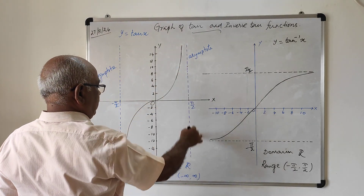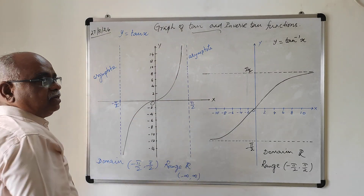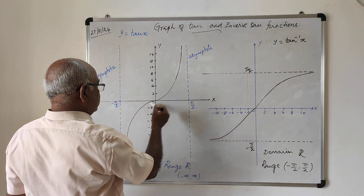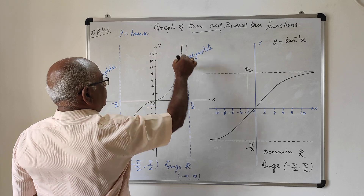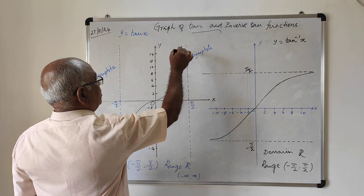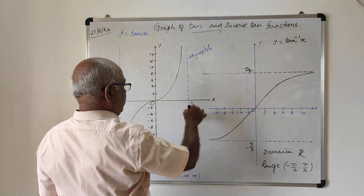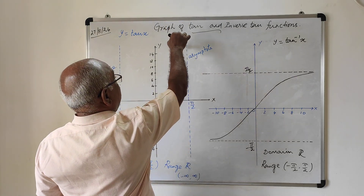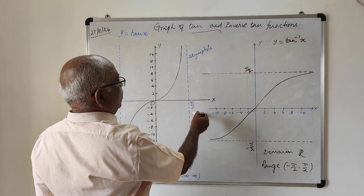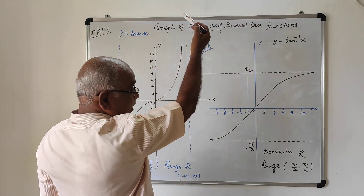These two lines, x = π/2 and x = -π/2, are the two asymptotes of this curve. An asymptote means the tan curve approaches the line x = π/2 but does not touch it. It is a tangent line at infinity — the curve touches the line x = π/2 only at infinity, meaning it never actually touches it.